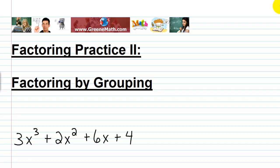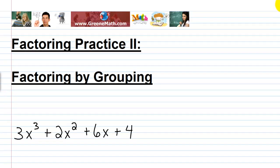Now sometimes the groups that you set up, they don't work out. So if you don't get a common binomial factor in the end, you have to go back and try to regroup and start the process over. So let's jump in and look at a problem here.